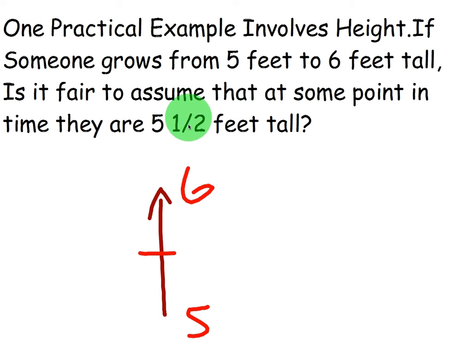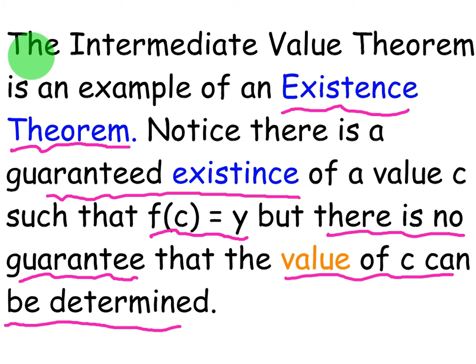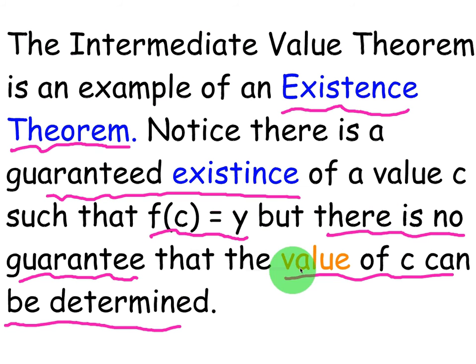In other words, somebody else could have chosen 5 feet 8 inches, and there's a guarantee that at some point in time, at some age, they were 5 feet 8 inches. That's a practical illustration of the Intermediate Value Theorem. The Intermediate Value Theorem is an existence theorem — notice there is a guaranteed existence of a value of c such that f(c) = y. But there is no guarantee that the value of c can be determined.